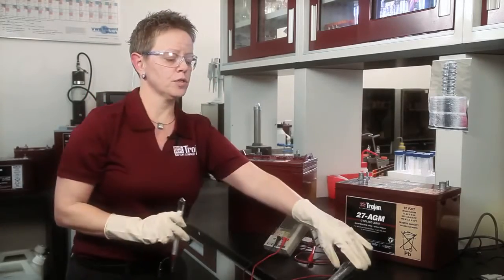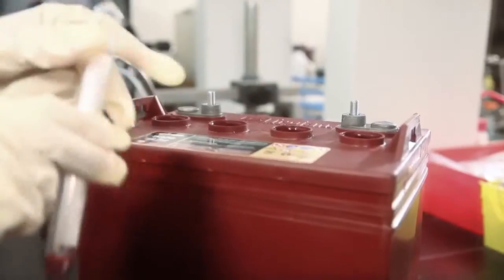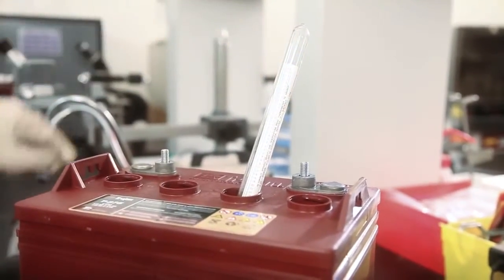It's important when you're reading specific gravity that you temperature-correct the value, so you should always have a thermometer. Place the thermometer in a center cell in the battery.